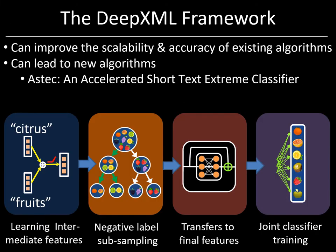DeepXML can address all of these challenges by decomposing the deep extreme classification task into four simpler subtasks or modules. In the first module, we take a feature extractor suitable for our application and train it quickly on a non-extreme surrogate task. The motivation is to learn an intermediate feature representation that is accurate but yet fixed so that we can train our highly scalable extreme classifiers in log time. Thus in the second module, we can leverage Parabel or Slice or whichever extreme classifier you like and eliminate all but a logarithmic number of the hardest to classify negative labels without much loss in accuracy.